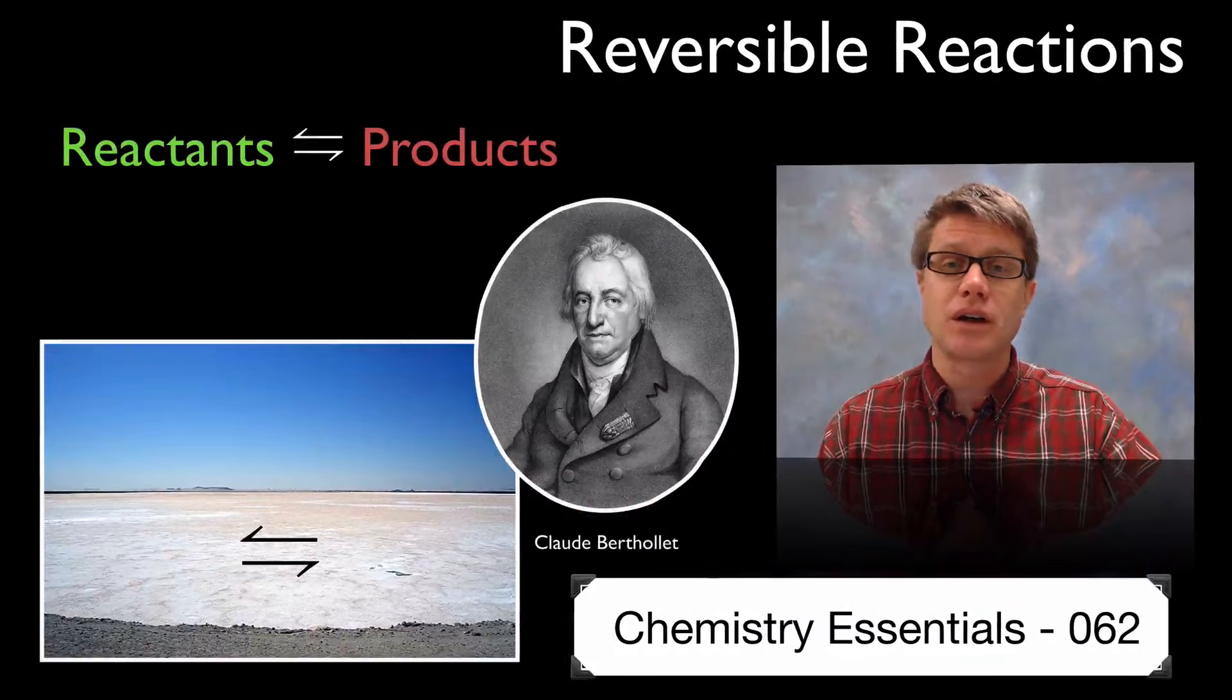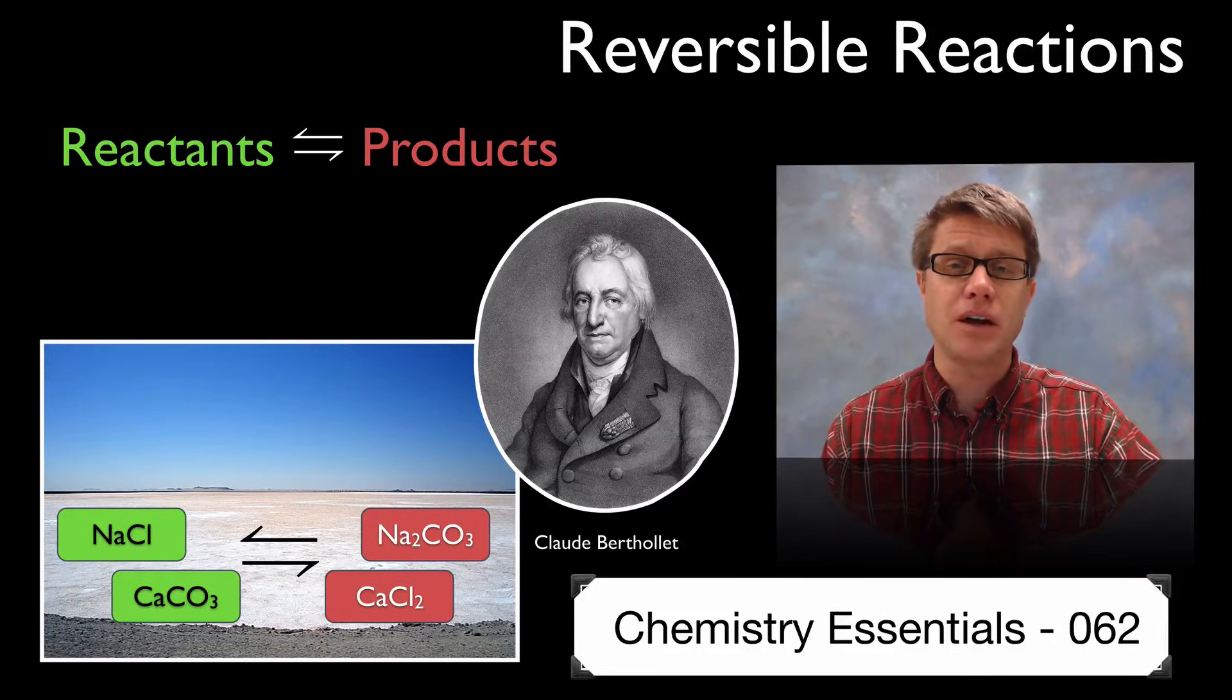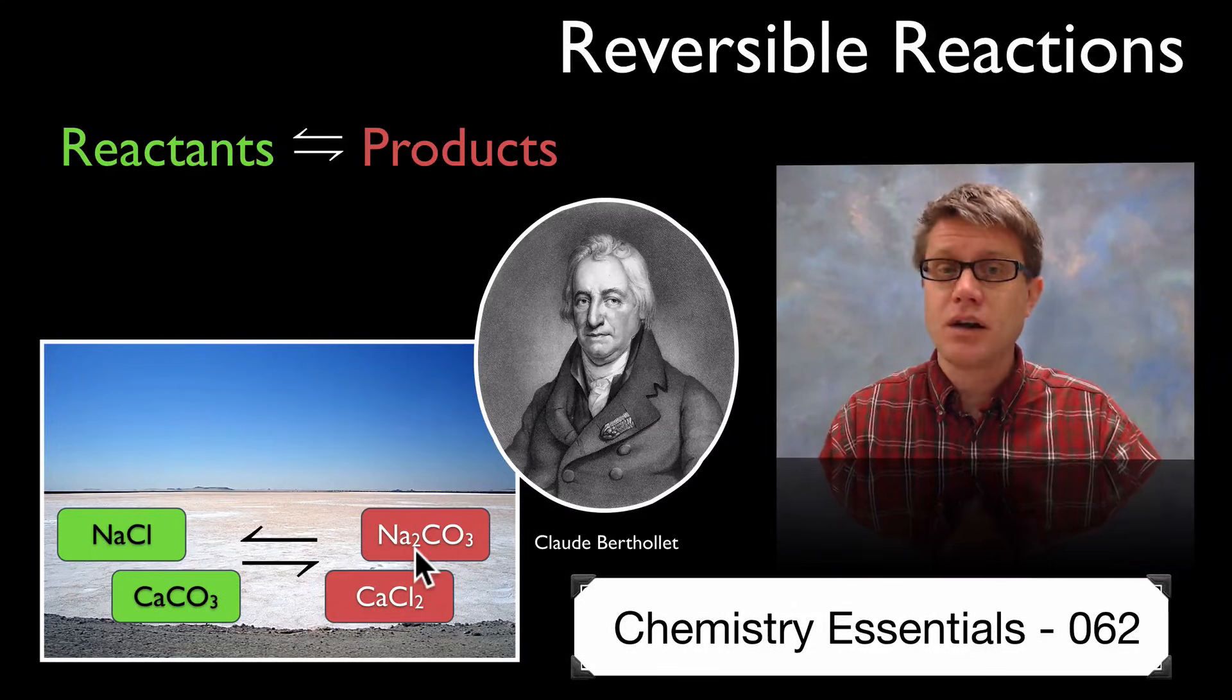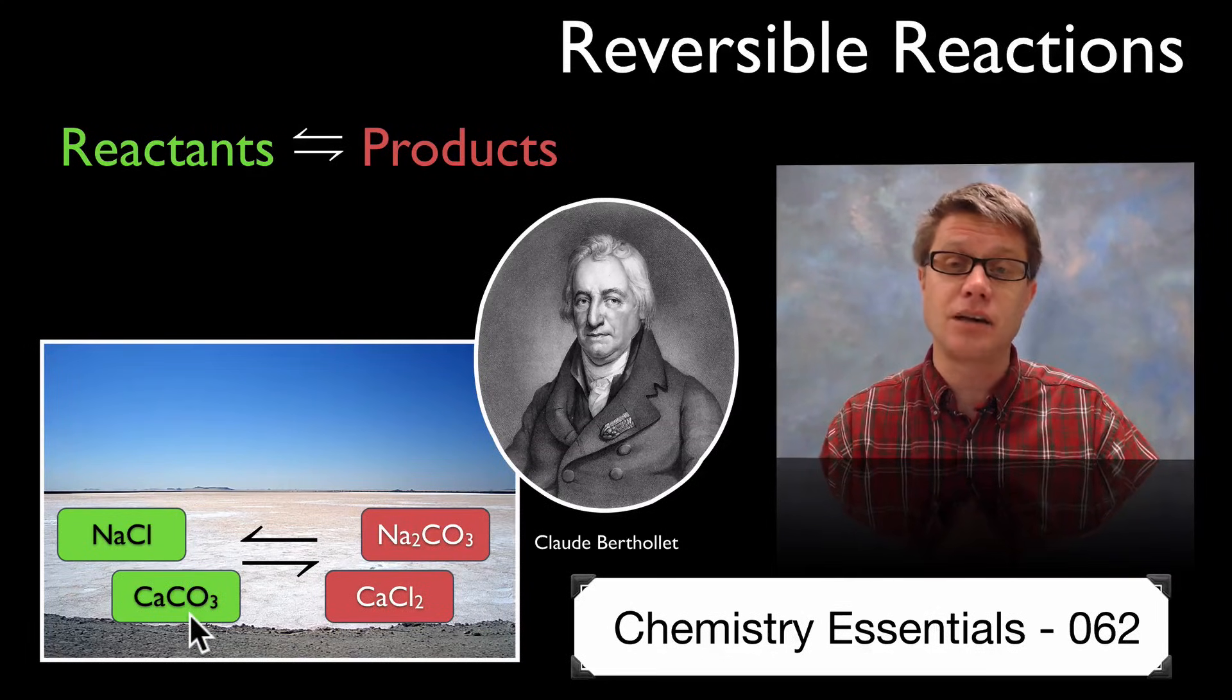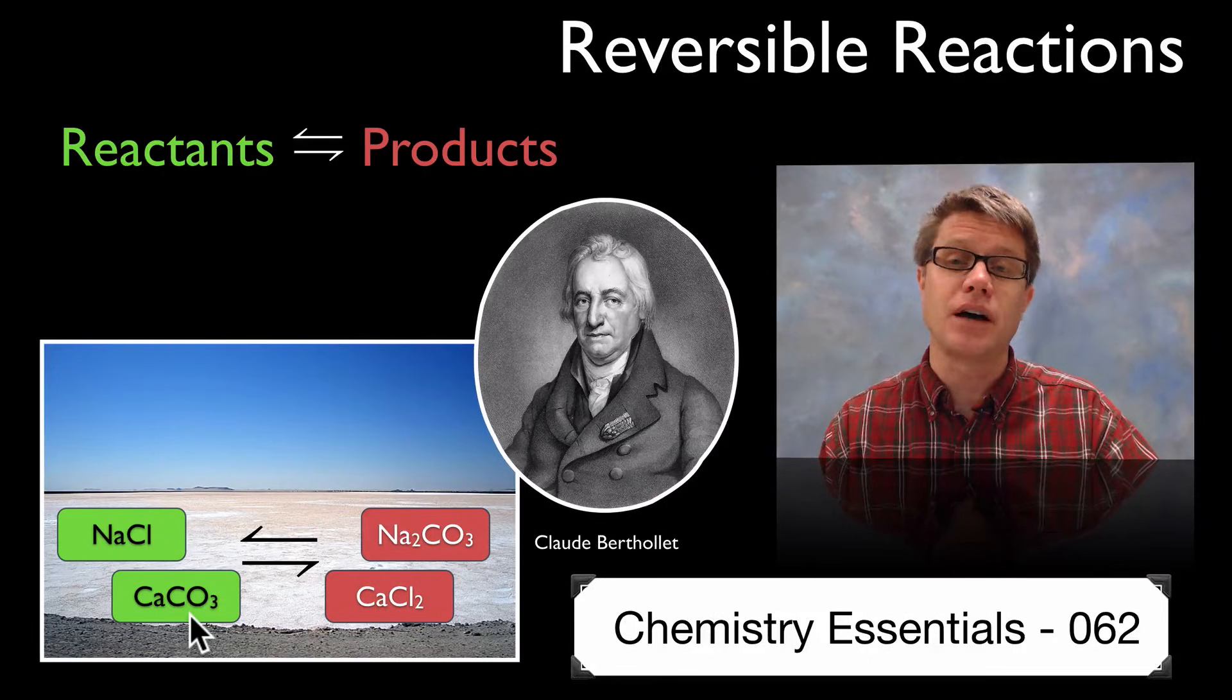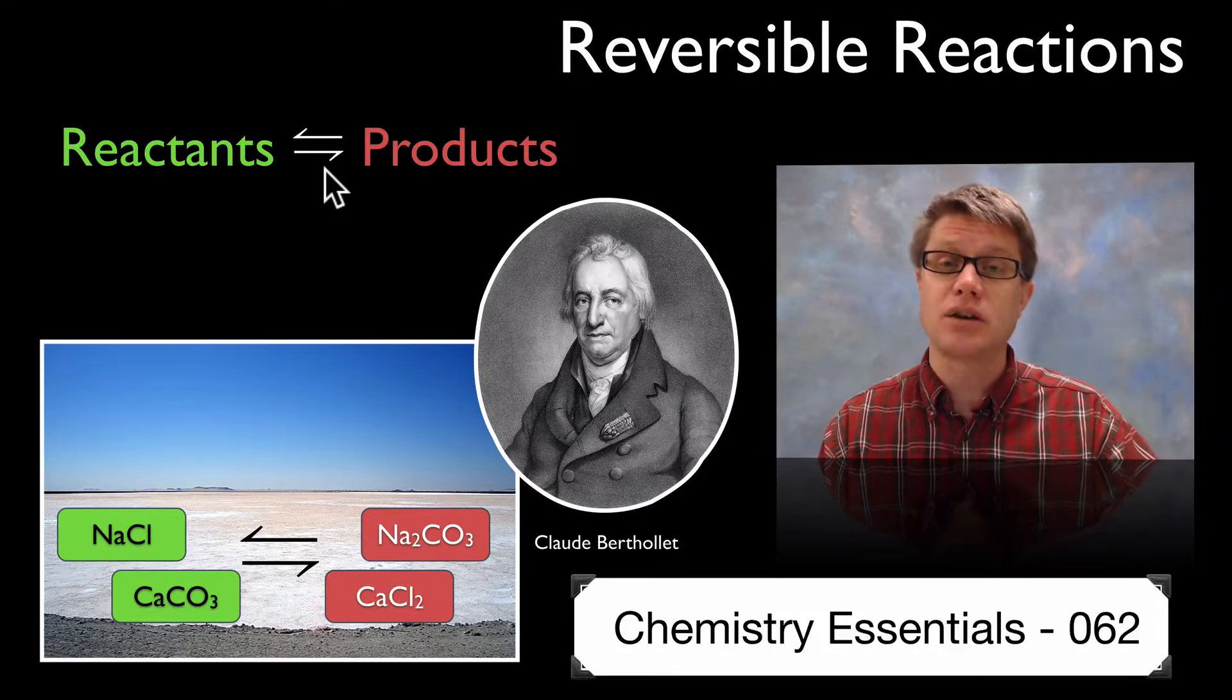It took chemists a long time to identify the reversible reaction. It was first identified by Claude Bertollet. He was looking at some lakes in Egypt and he found sodium carbonate. He knew that sodium carbonate and calcium chloride would combine to form salt and calcium carbonate, which is essentially limestone. But he didn't know that the reverse occurred. He found different levels of this and identified it as a reversible reaction. We use an arrow that goes both directions to show that the reactants are being converted to products and the products back to reactants again.